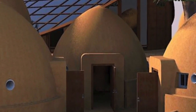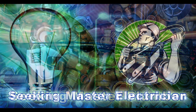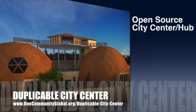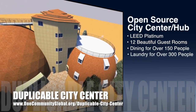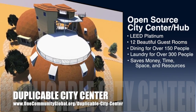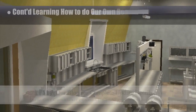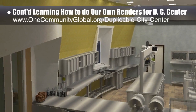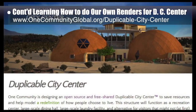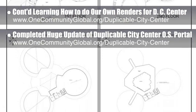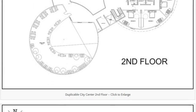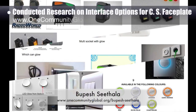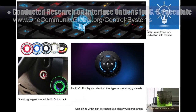In the housing area of the project, we are seeking a master plumber and a master electrician. One Community is also creating an open source duplicable city center designed to be LEED Platinum certified, provide 12 guest rooms, dining for over 150 people, and laundry and recreation space for over 300 people, all while saving money, time, space, and resources. This week the core team continued learning to do our own renders for the duplicable city center, returning to the kitchen with more focus on lights, windows, and materials, and completed a huge update of the duplicable city center open source portal improving formatting and adding updated floor plan exports from AutoCAD. Bupesh Sithala, interior designer, also researched different interface options for the control system's faceplate to be built into the visitor room's pallet furniture beds.